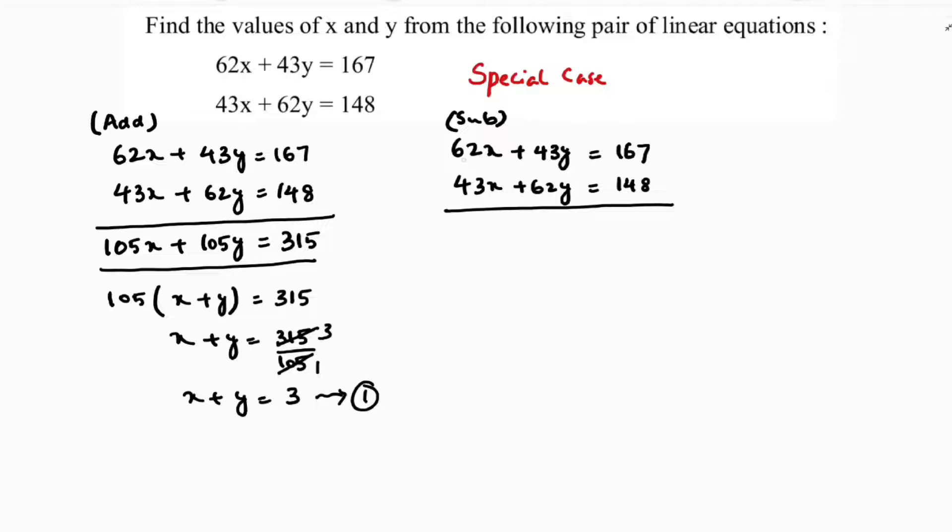Now here 62x, now I'll subtract. So 62 minus 43 is 19x. 43 minus 62 is minus 19y. 167 minus 148 is 19.